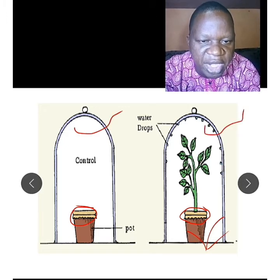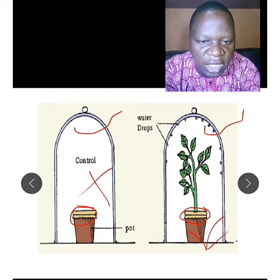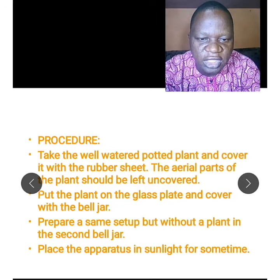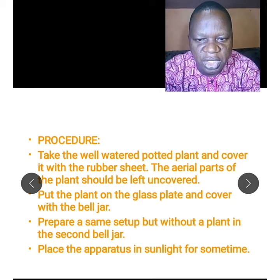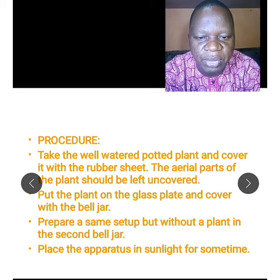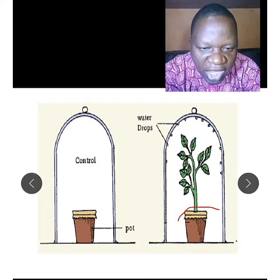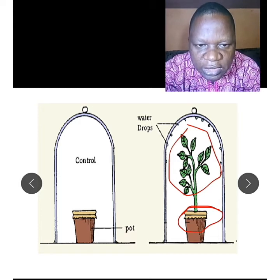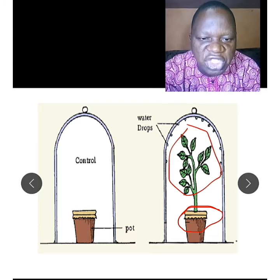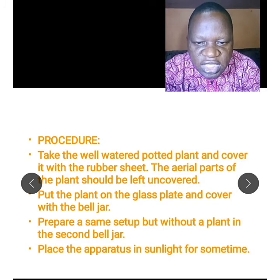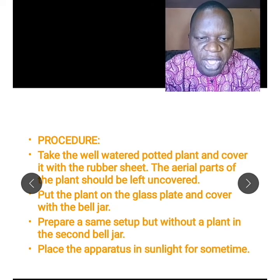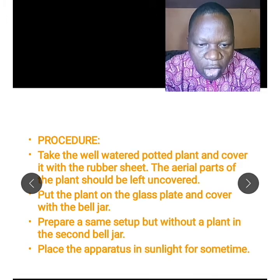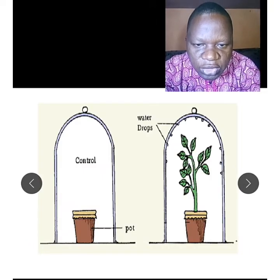This is the control experiment — a setup without a plant. For the procedure: take the well-watered potted plant and cover it with a rubber sheet. The aerial part of the plant — the leaf and stem — remains uncovered. Then place the plant on the glass plate and cover it with the bell jar. Prepare the same setup without a plant as the control experiment.